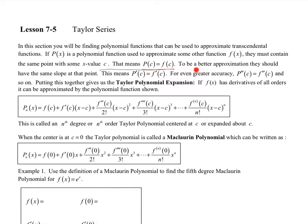We also did something like this with tangent line approximations, but we want to have the same slope at that point too. So we're doing approximations to the curve, and p prime of c should equal f prime of c. To keep increasing accuracy, we want p double prime of c to equal f double prime of c, and so on.